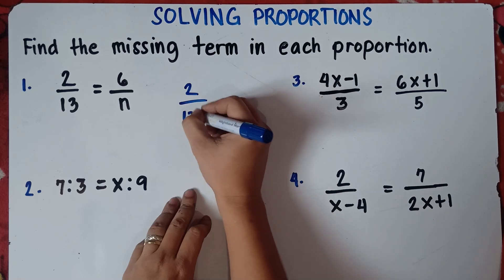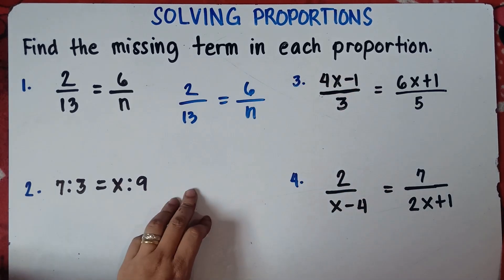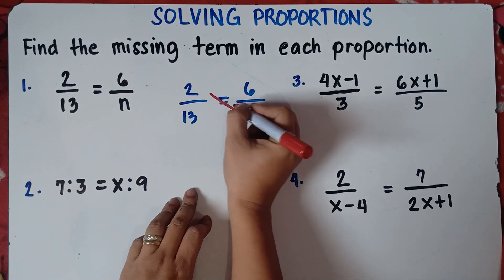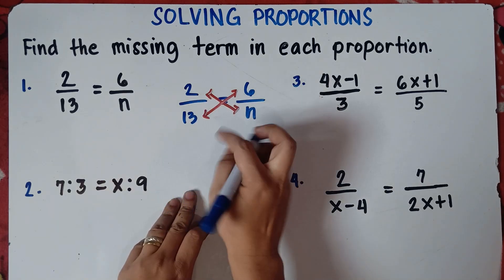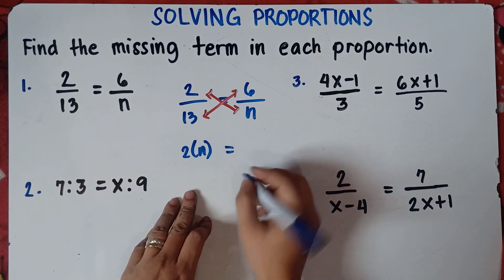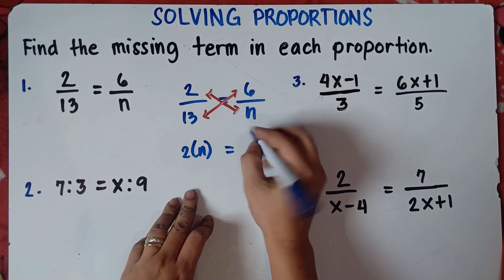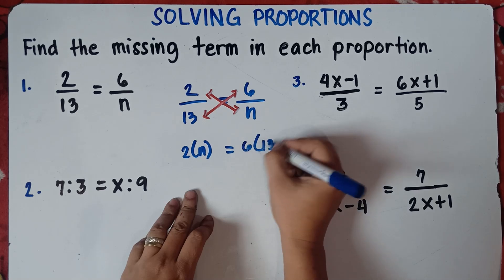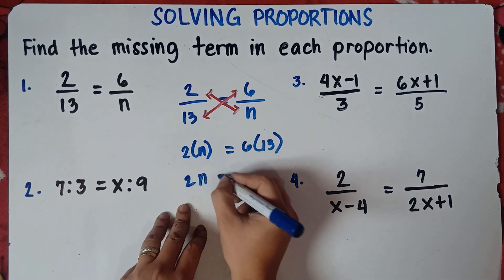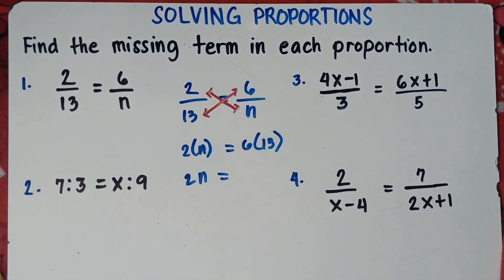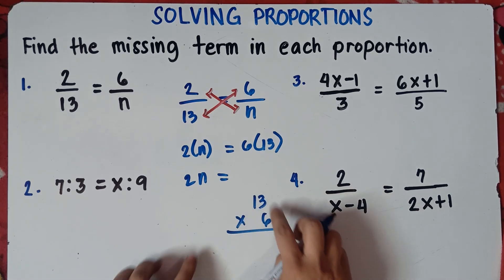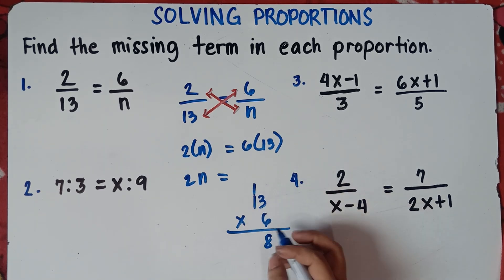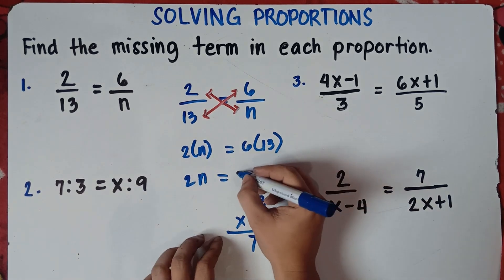So 2 over 13 equals 6 over n. Just do cross multiplication — multiply this one and this one. So this will be 2 times n equals 13 times 6. So 2n equals 6 times 13. 13 times 6: 6 times 3 is 18, carry 1; 6 times 1 is 6, plus 1 is 7. That gives us 78.